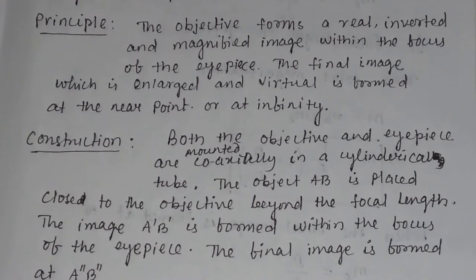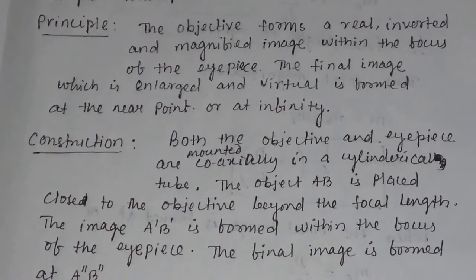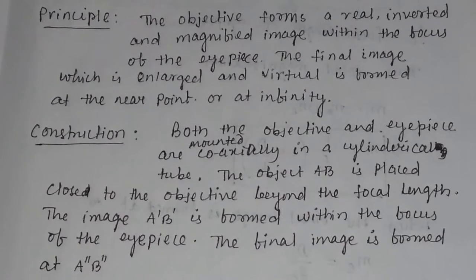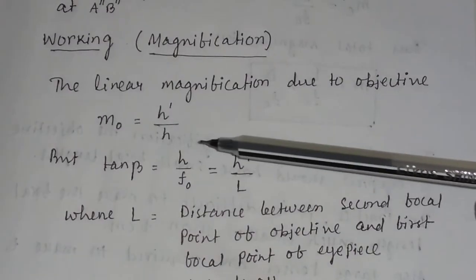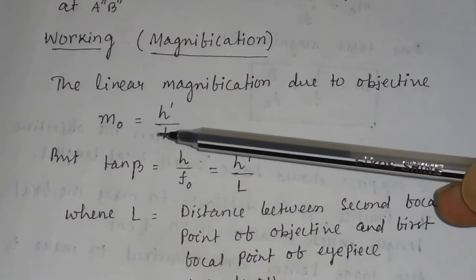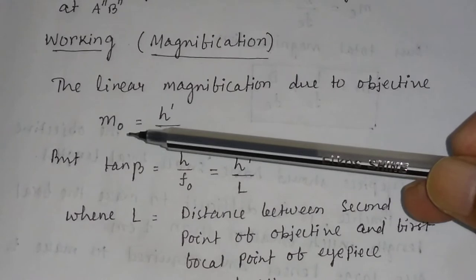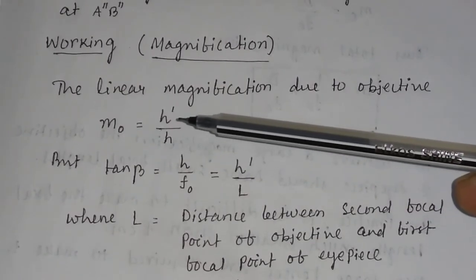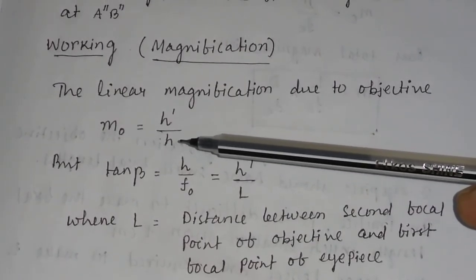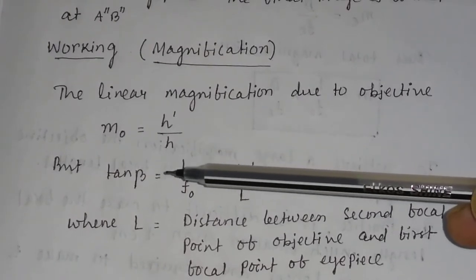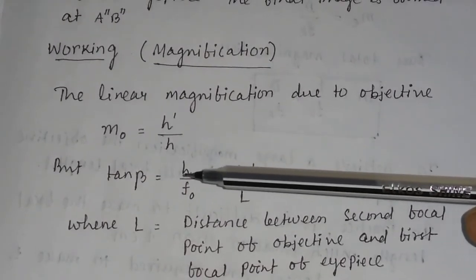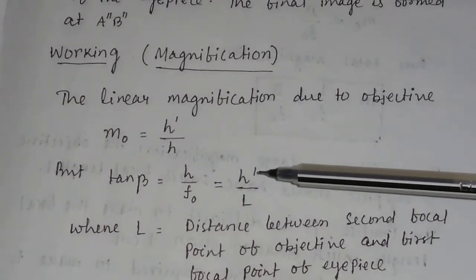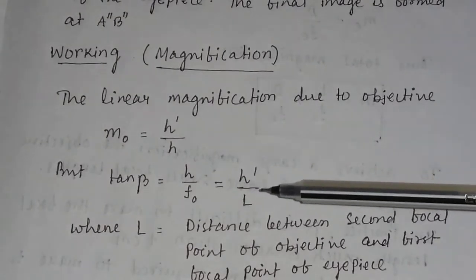Let us discuss the working or the magnification. The linear magnification due to the objective, M0, is equal to H' divided by H. From the figure, tan β is equal to H divided by F0, which is equal to H' divided by L.